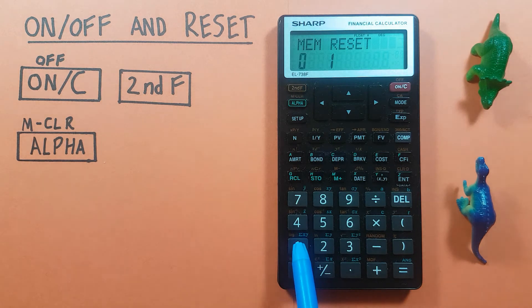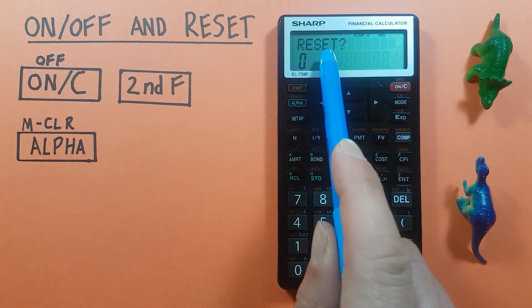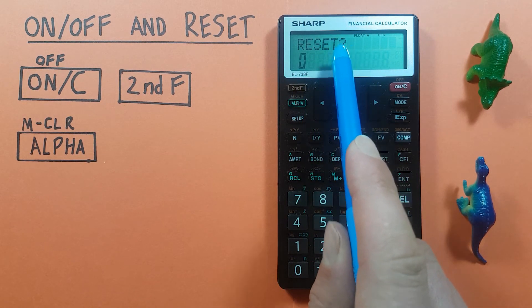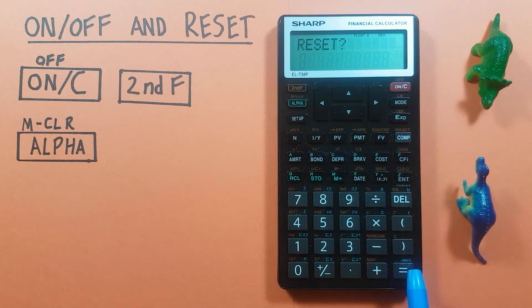So if we press one, it'll say reset question mark. And if we want to confirm this, we press equals.